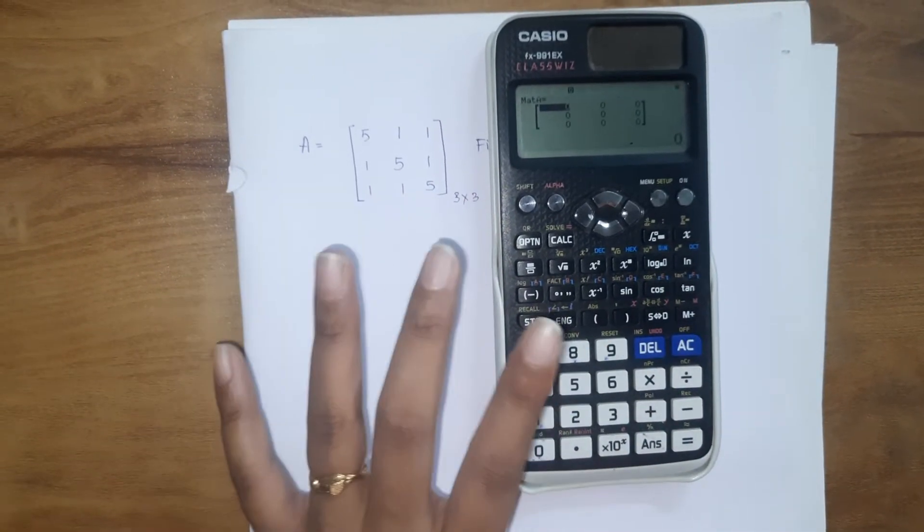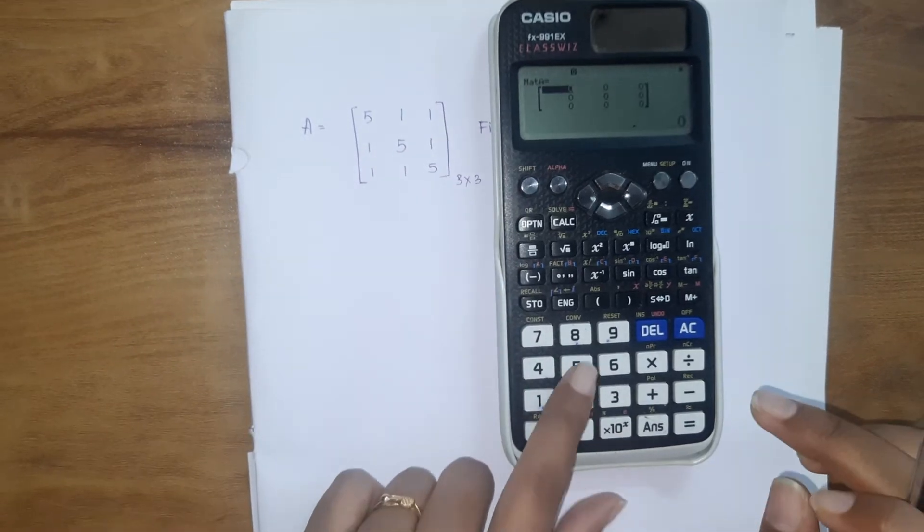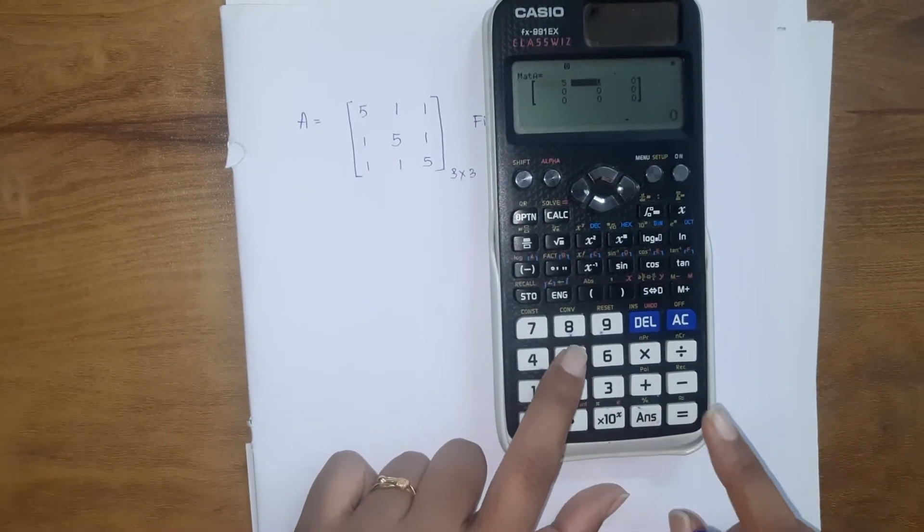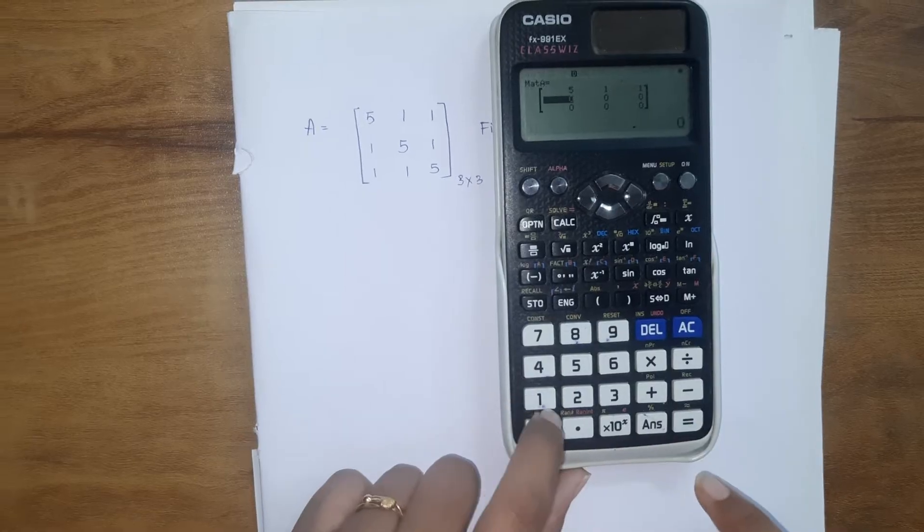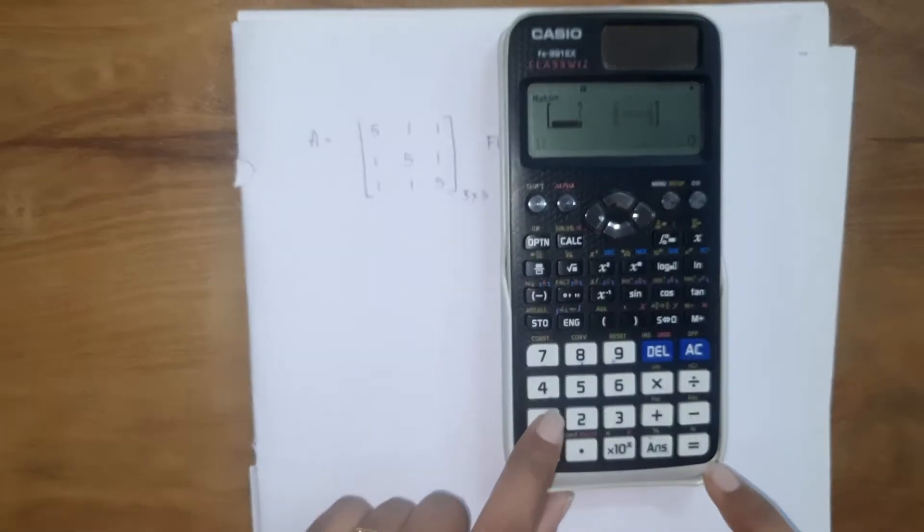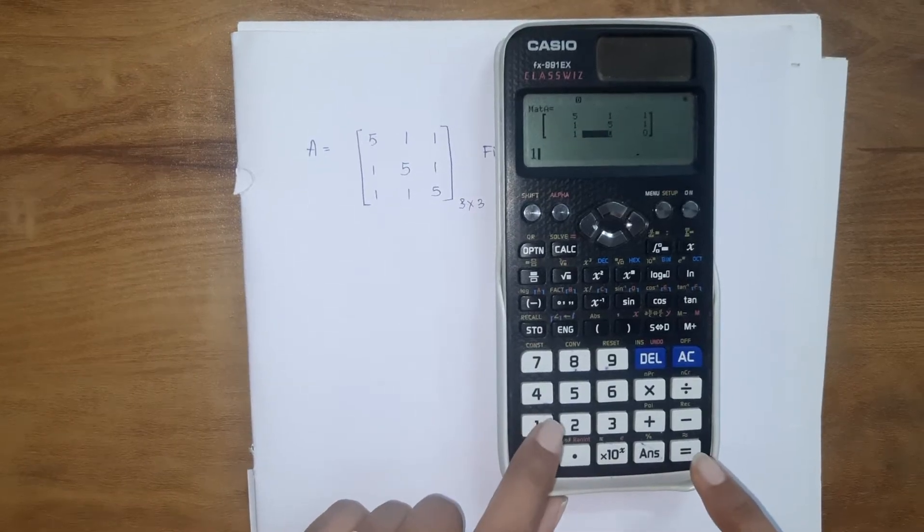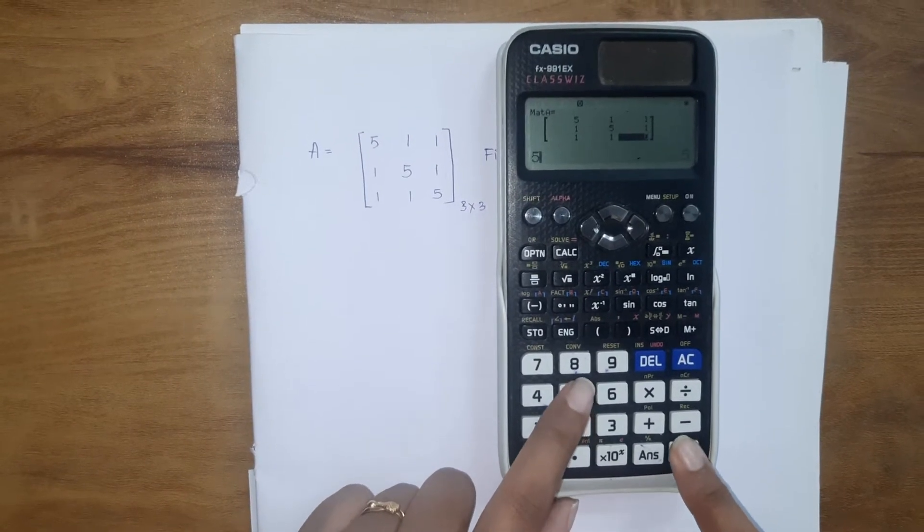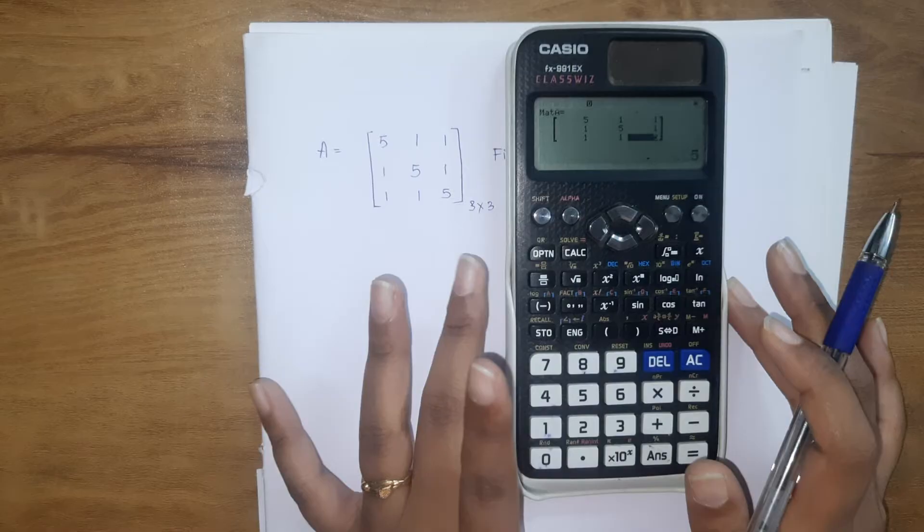Okay, now we are going to enter the values. So 5 equals, 1 equals, 1 equals, 1 equals, 5 equals, 1 equals, 1 equals, 1 equals, 5. So we have entered the matrix and defined it.